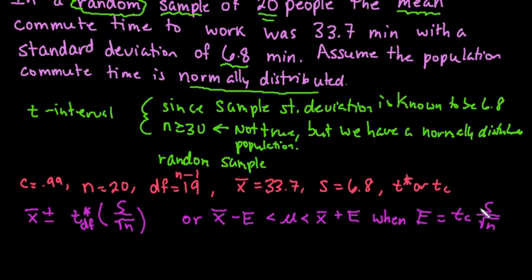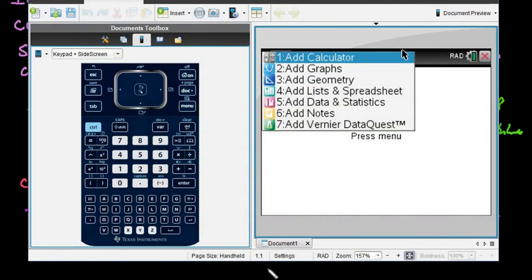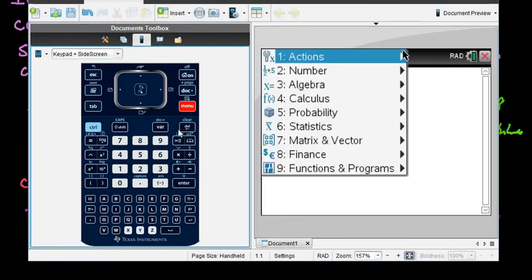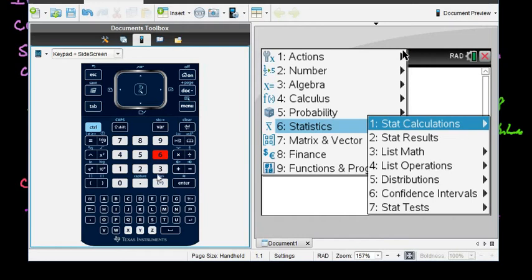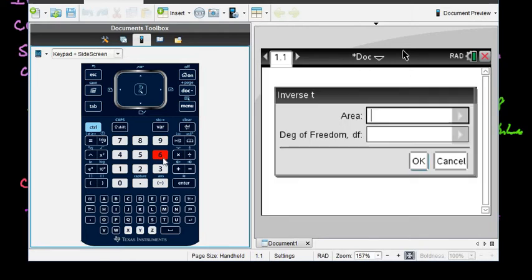So to find the T-star using the graphing calculator—to me it's almost easier just to use the table—but what we would do is I'm going to go to a calculator screen, and on my calculator screen I'm going to go to Statistics and Distributions, and then I'm going to go to Inverse T. Inverse T will help us find our T-score.